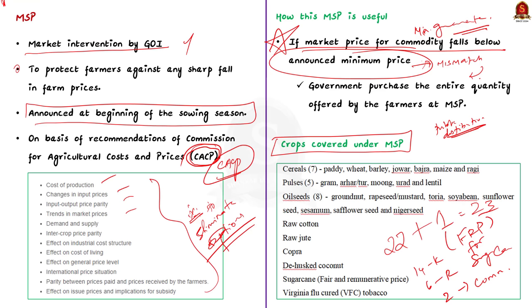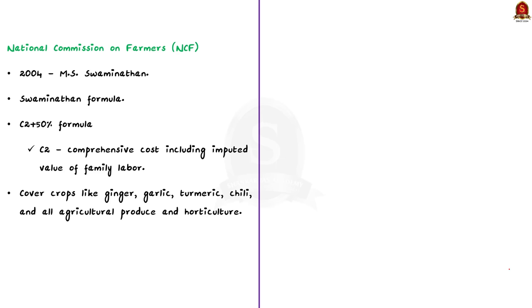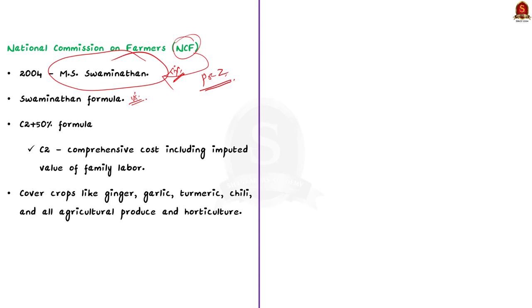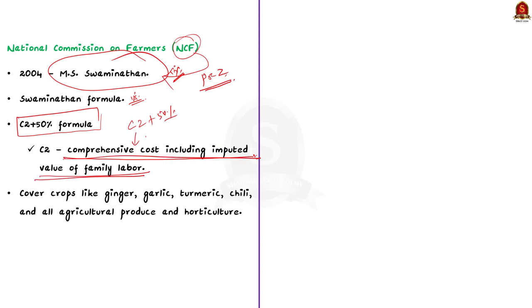There is also another mechanism to calculate MSP, given by eminent agricultural scientist Dr. M.S. Swaminathan, who passed away recently. The National Commission for Farmers, NCF, was constituted in 2004 under the chairmanship of M.S. Swaminathan. This is famously called the Swaminathan formula. The Swaminathan Commission recommended that MSP shall be calculated by adding 50% profit to the C2 cost — meaning comprehensive cost including the imputed value of family labor. This is called the C2 plus 50% formula. The commission also suggested expanding the scope of MSP to cover crops like ginger, garlic, turmeric, etc.